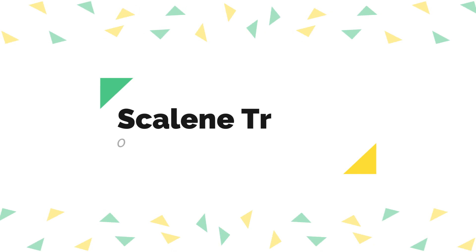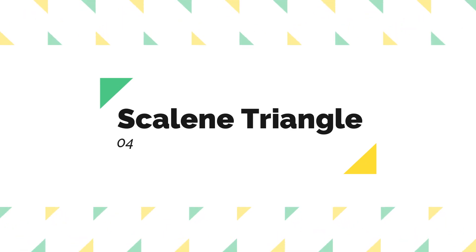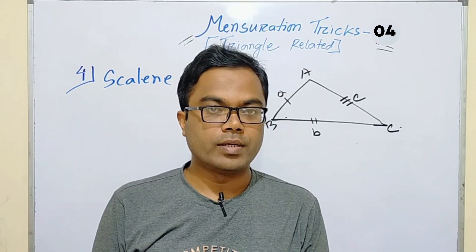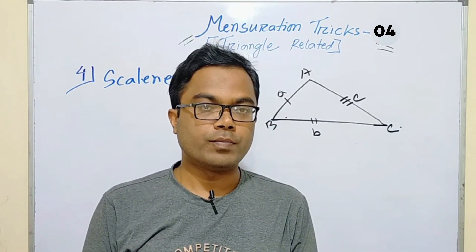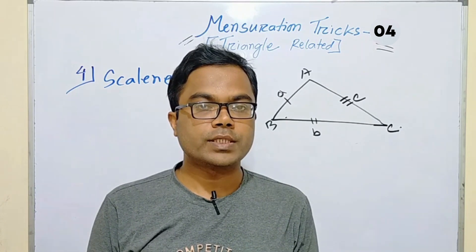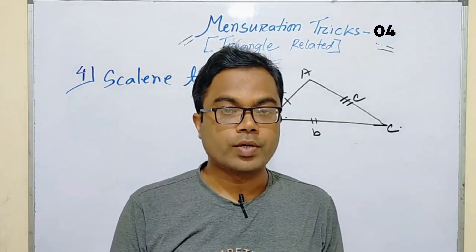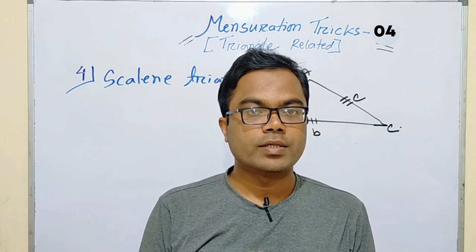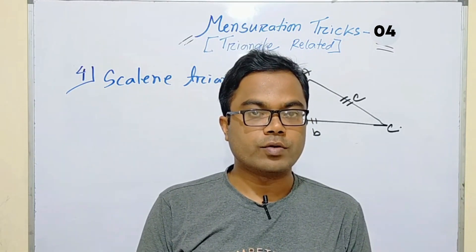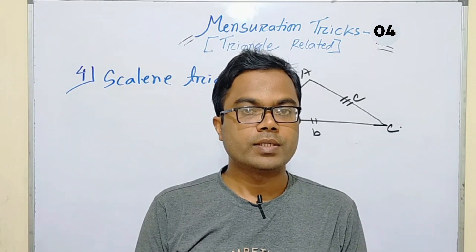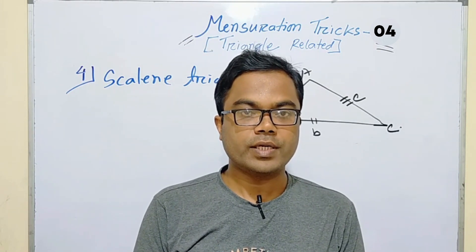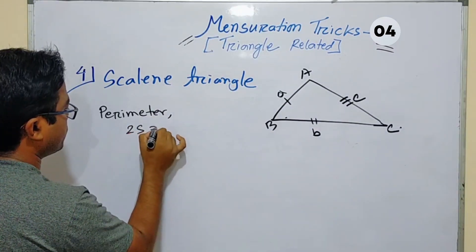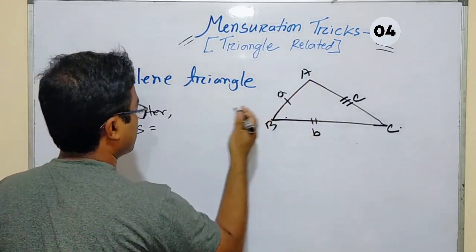Now we are going to find out how to find the area of a scalene triangle — one whose all three sides are unequal. This is very important. First, find the perimeter, then find half of the perimeter, and then you will be able to find the area of the triangle.